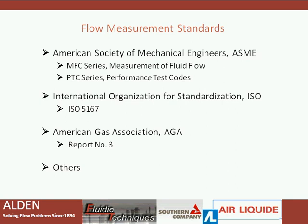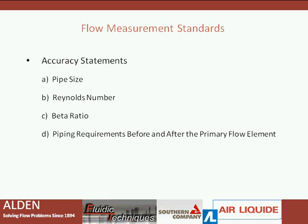There are several flow measurement standards covering the design and manufacture of differential-producing primary flow elements, including the American Society of Mechanical Engineers, which publishes the MFC series for measurement of fluid flow and the performance test code PTC series. Another standard is the International Organization for Standardization, or ISO, which publishes ISO 5167. There's also the American Gas Association — commonly used is AGA number 3. Flow measurement standards provide accuracy statements, typically based on pipe size, Reynolds numbers, and beta ratios, and they specify the required upstream and downstream straight length before and after the primary flow element.